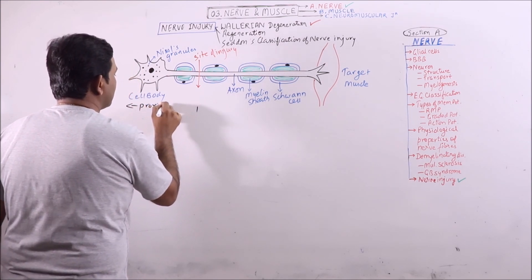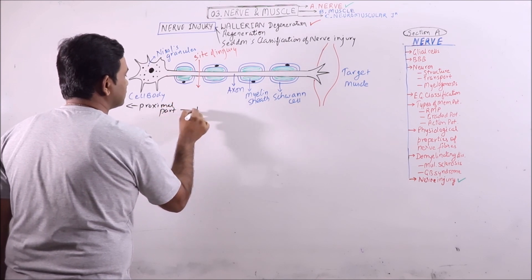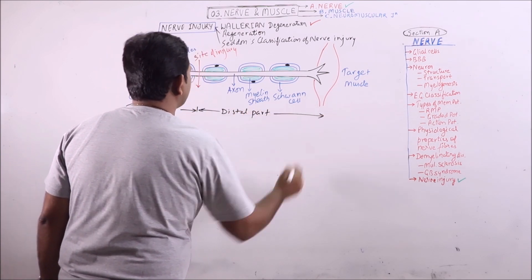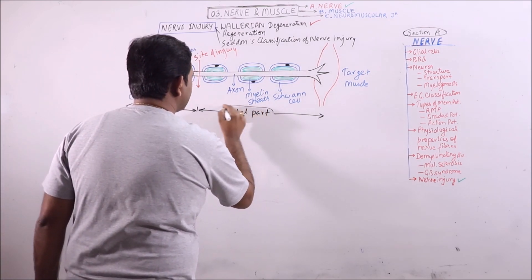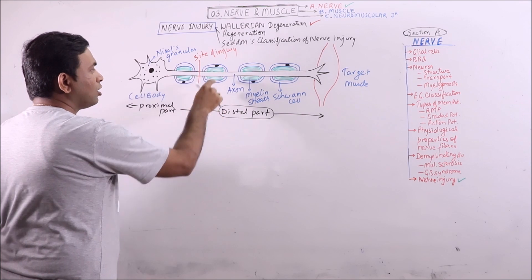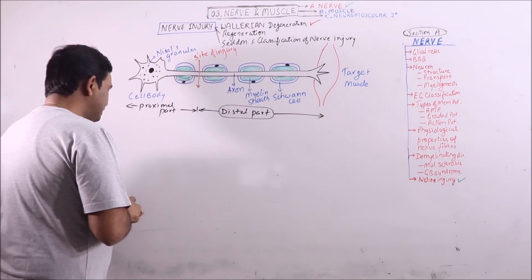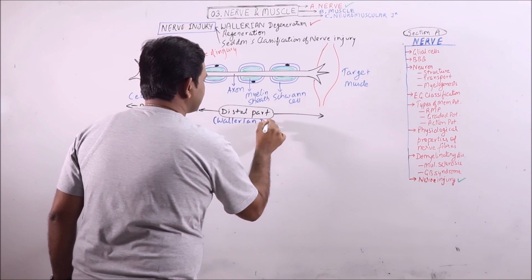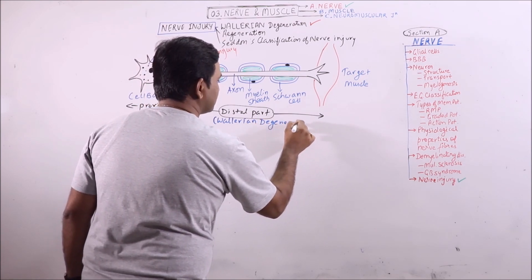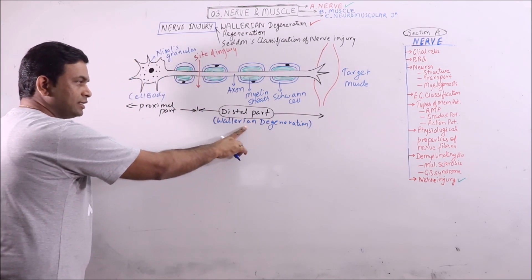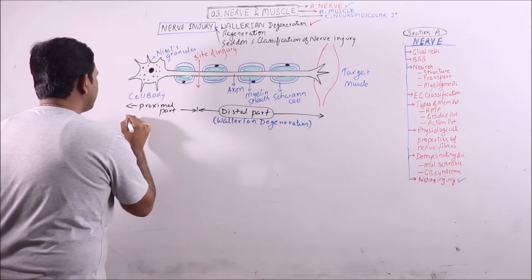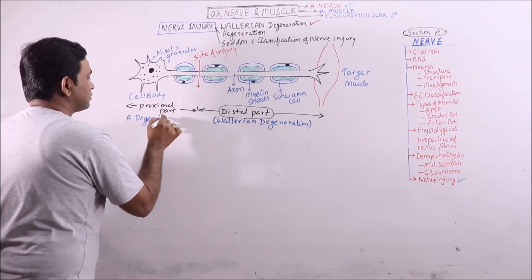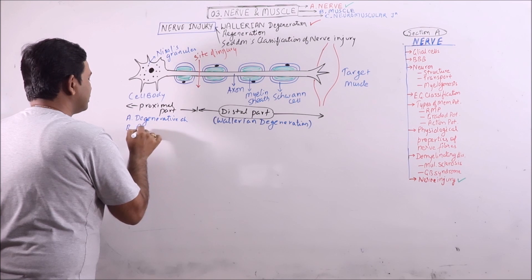This is the proximal part and this one is considered as the distal part, or part of the neuron distant to the site of injury. The distal part — that is, the part of the neuron distant to the site of injury — will be degenerated, and that degeneration is known as Wallerian degeneration. The distal part will show Wallerian degeneration and the proximal part will show first some degenerative changes and then regeneration.